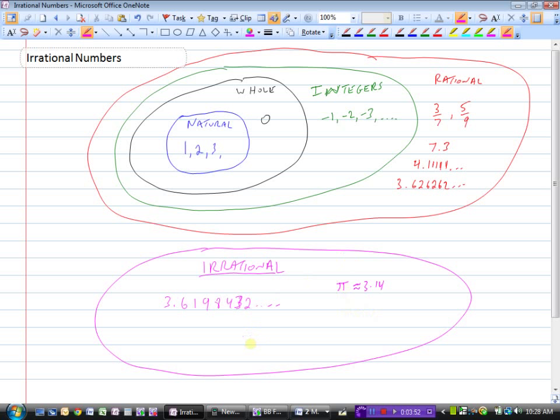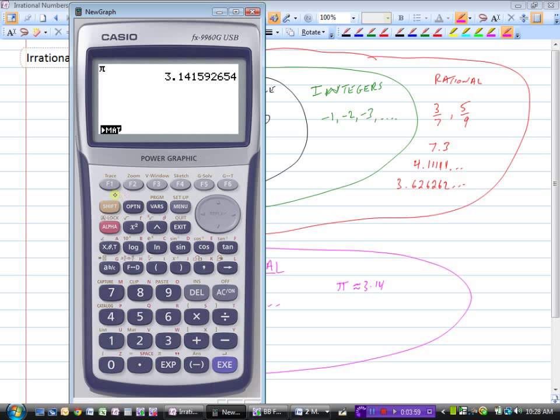Other numbers that are irrational are often square roots. So for instance, if I take the square root of 2, punch that into the calculator...